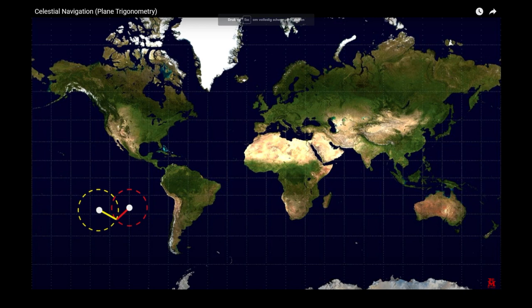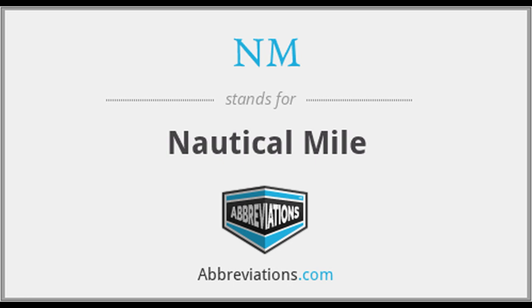So there is no radius of the circle of equal altitude to draw, no matter which map you use. The only method Morgyle proposes to calculate your distance to the GP is the 60 nautical miles per degree zenith angle. Notice that he doesn't even understand that 'nm' stands for nautical mile.